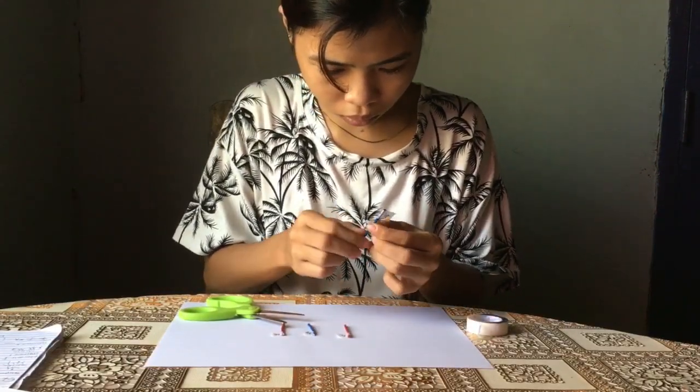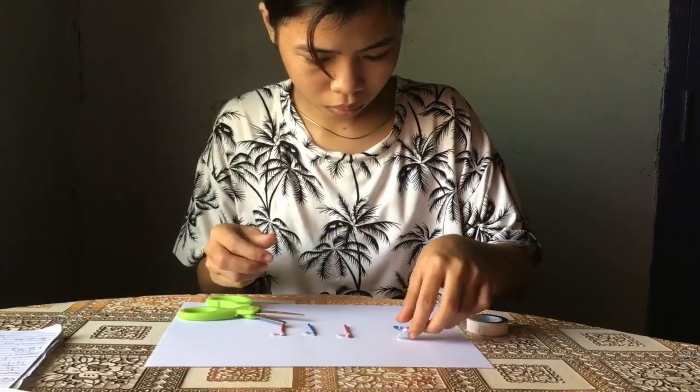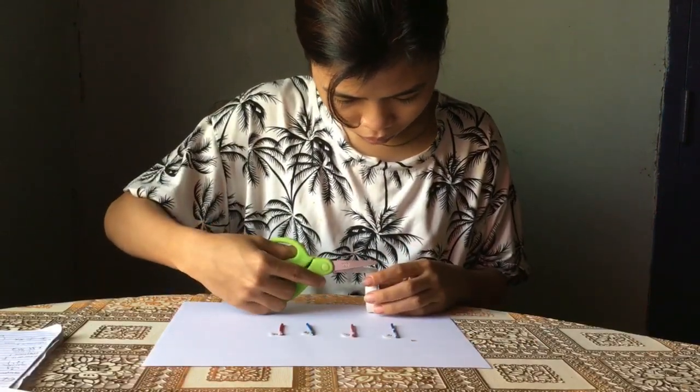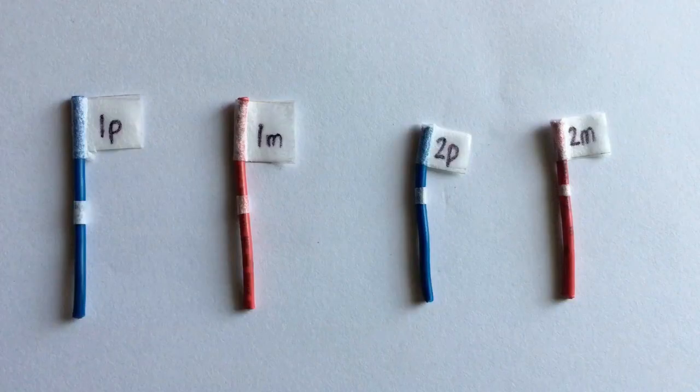At the tip of each chromatin, place the tape labeling 1P for the long blue wire, 1M for the long red wire, 2P for the shorter blue wire, and 2M for the shorter red wire.